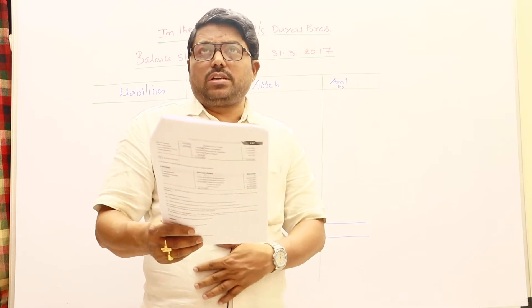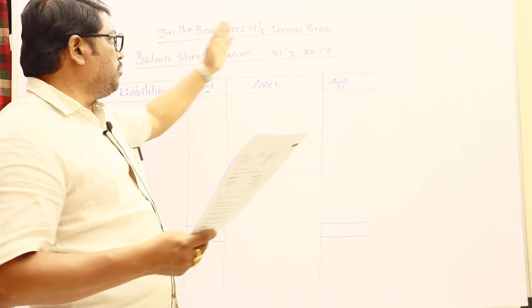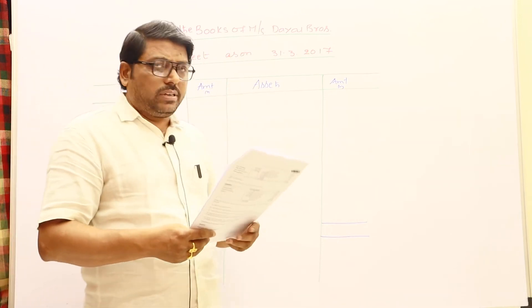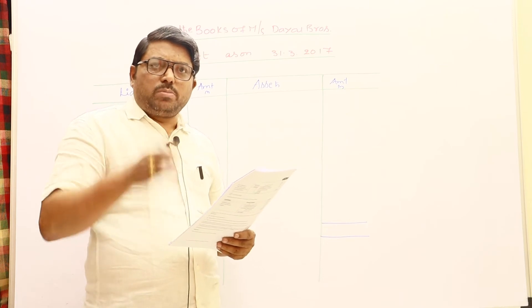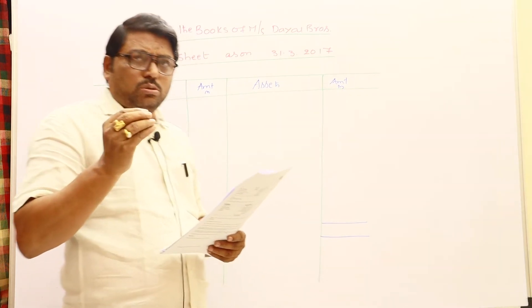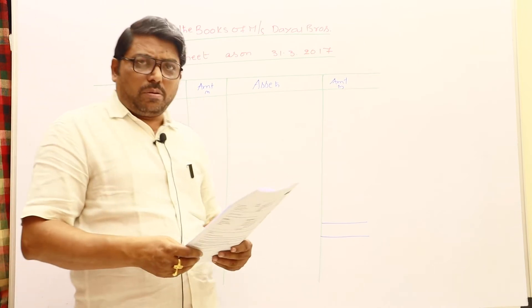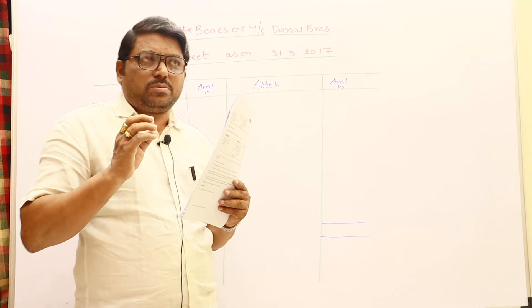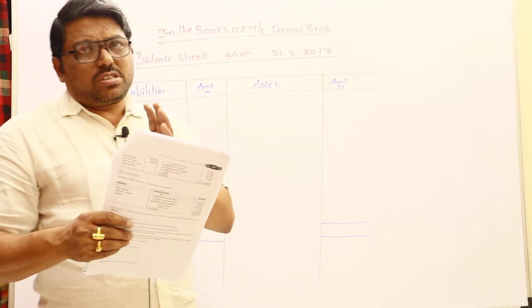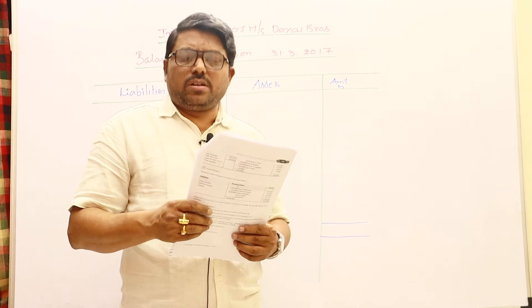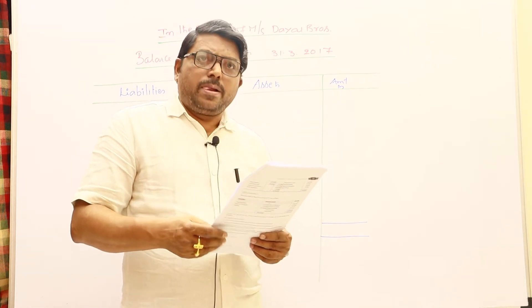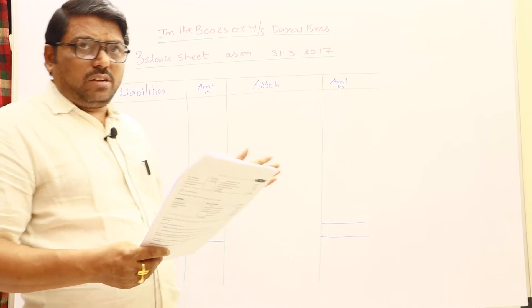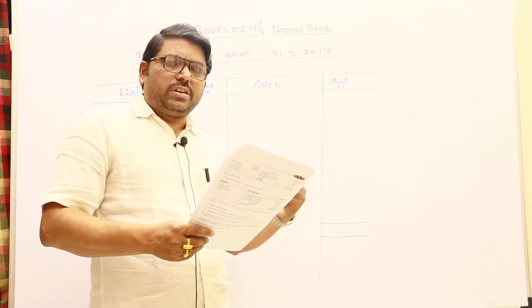As on 31st March 2017, put the heading in the books of Mrs. Dayal brothers balance sheet as on 31st March 2017. Company balance sheet is always to be done in the vertical manner, whereas a sole trade partnership balance sheet is to be done in the horizontal manner. So company, particularly, is in a different style. You have to prepare final accounts, company final accounts and company balance sheet. But whereas here in sole trade partnership, balance sheet is horizontal, which you can do in either rigidity preference method or liquidity preference method.